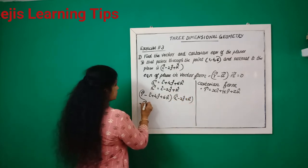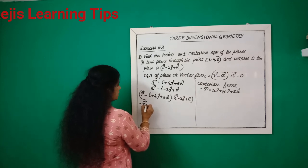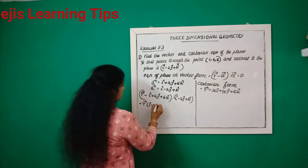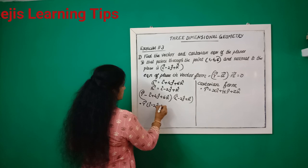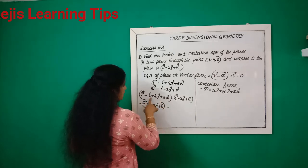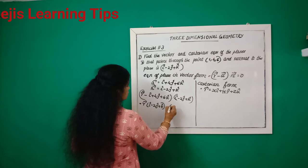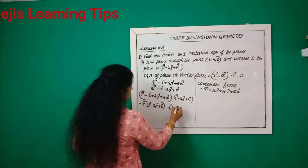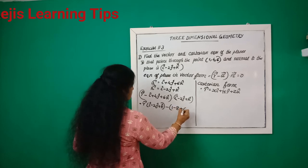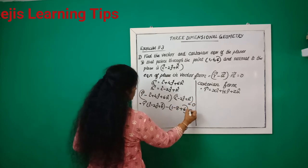Expanding: r vector dot (i minus 2j plus k). Then computing a dot n: 1 into 1 is 1, 4 into minus 2 is minus 8, 6 into 1 is 6. That equals zero.